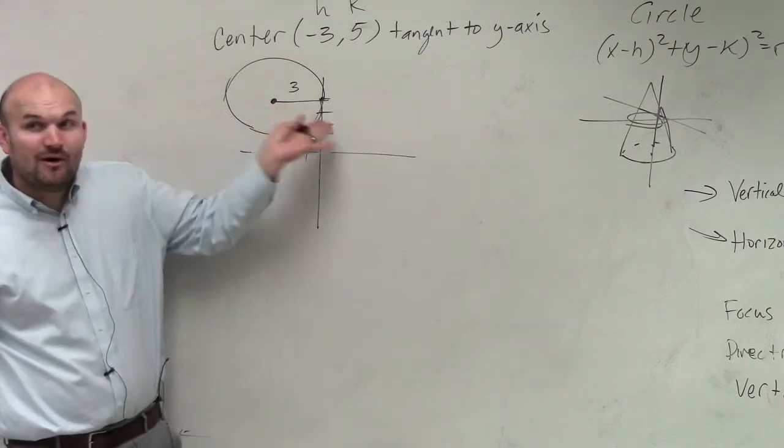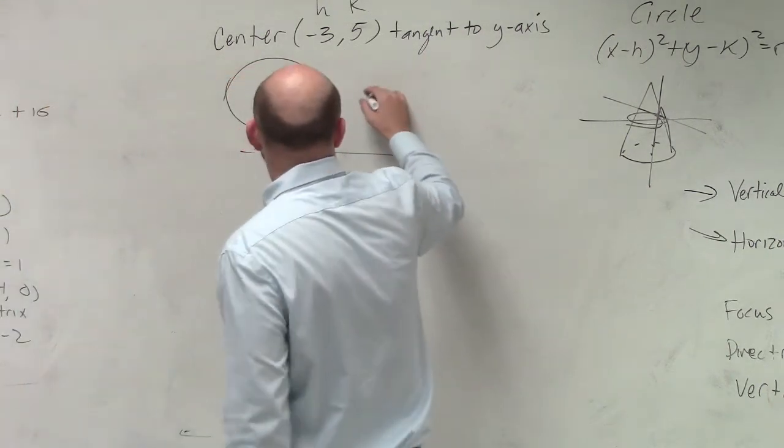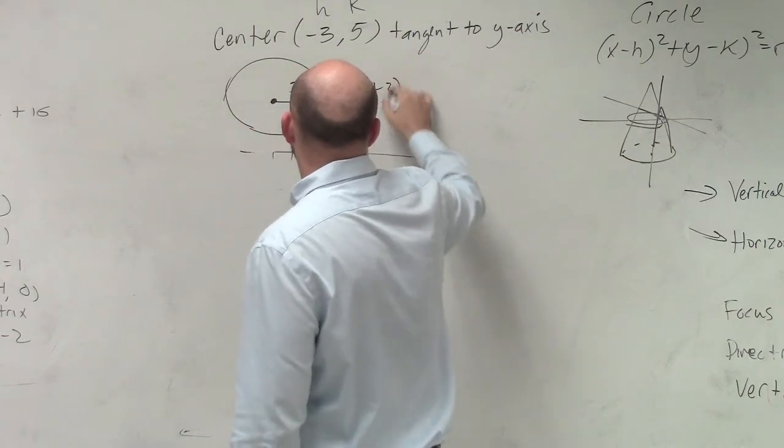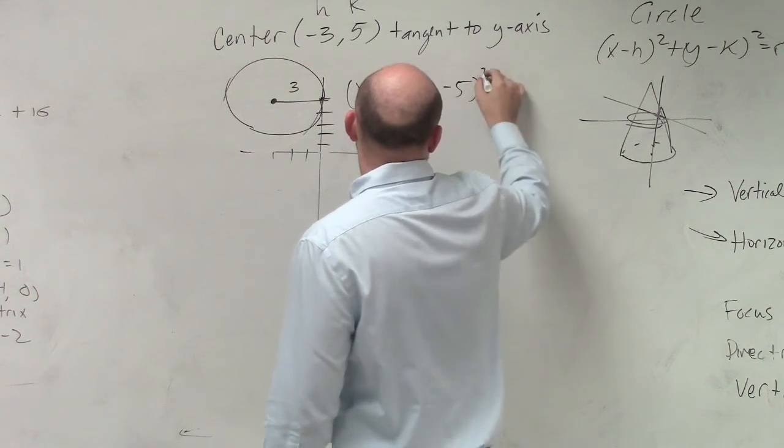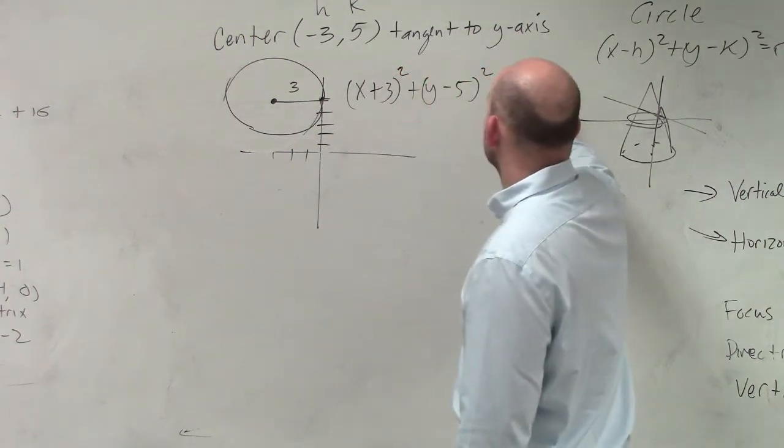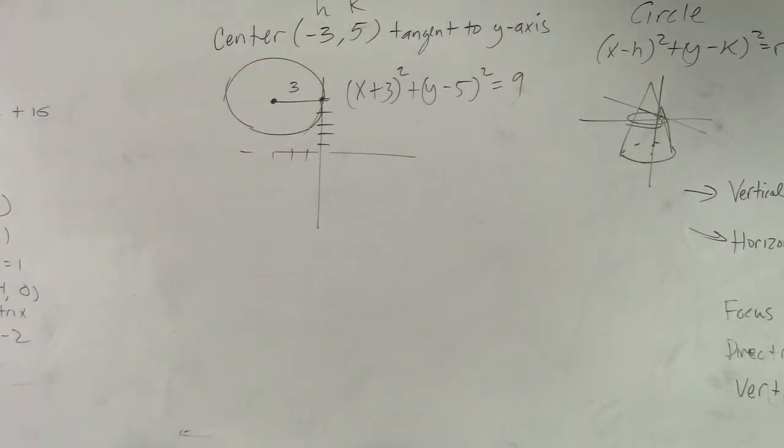So anyways, we know our r, though. Does that help us now? Yes. So now we can write this as x plus 3 squared plus y minus 5 squared equals 3 squared, which is 9, right? Because you square the r.